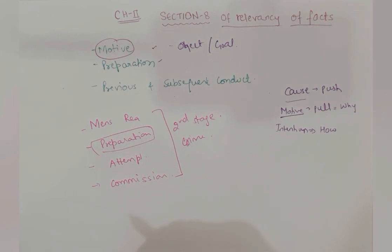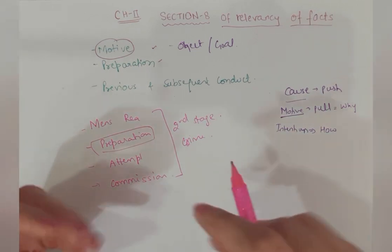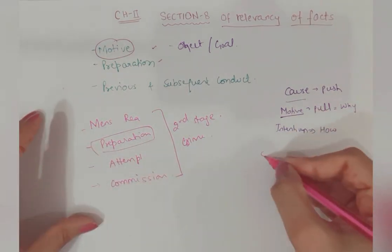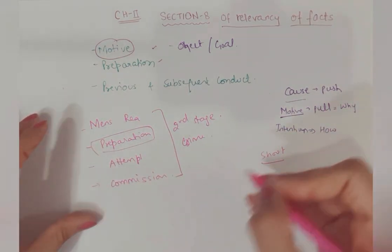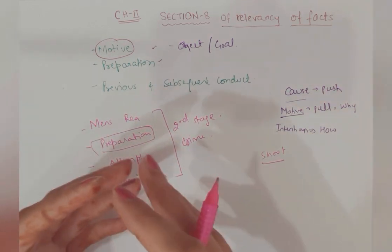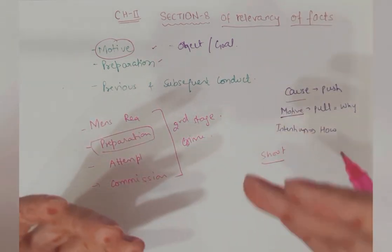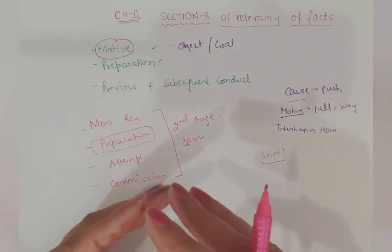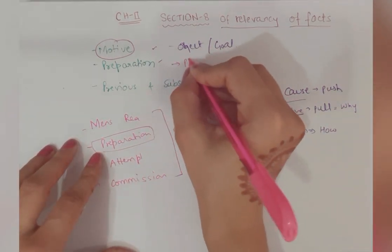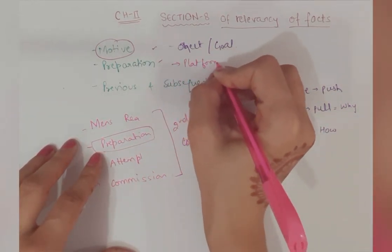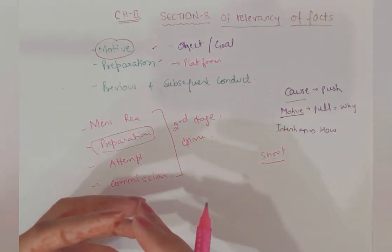It's the platform upon which crime is committed. For example, if you are shooting someone, where person is standing, he took the pistol, he put bullet, he goes close to him - creation of such circumstances which give a platform to the person.